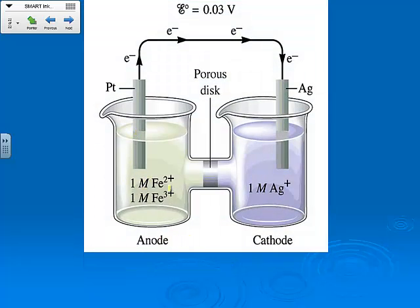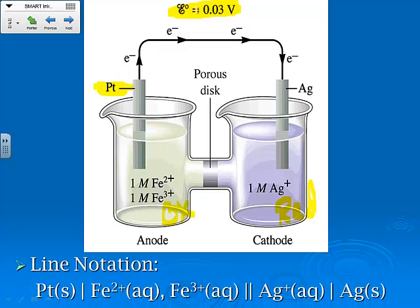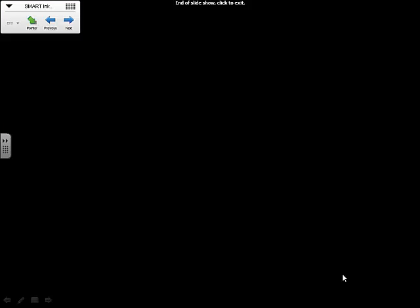And then this would just be a picture here where, since there's no solid for the iron, we had to put platinum. We still put our anode, which is where our oxidation reaction is going to be. Our cathode has our reduction. And then we show our electrons. We have our voltage. And we're going to draw several of these in class, but that's kind of the basics of how you would identify it. And our line notation down here, same thing. You've got the solid. You've got the two parts. The anode is on the left. The cathode is on the right.